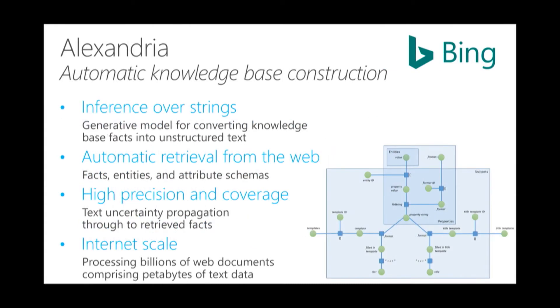Finally, I'm a little nervous to talk about this because we haven't published it yet. It's a system called Alexandria, which tries to go online, look at the internet — conveniently we're one of the companies that have a copy of the internet cached in our backyard — and extract all of the knowledge from the internet in a structured form. It performs inference over strings, with a generative model for converting knowledge-base facts into unstructured text. It achieves very high precision and coverage because the uncertainty in the text is propagated through the probabilistic program to the extracted facts. It can discover facts, entities, and the properties of those entities — so the schema is all learned. It runs at truly internet scale: petabytes of data and billions of web pages.